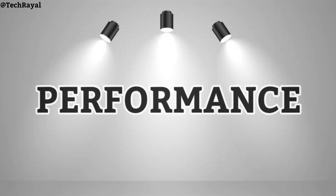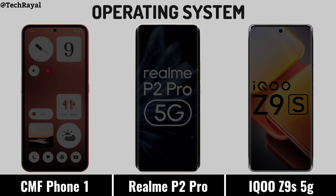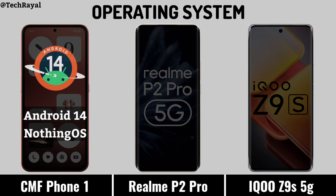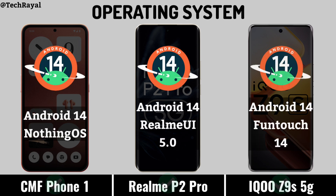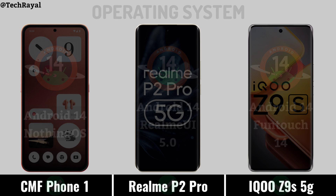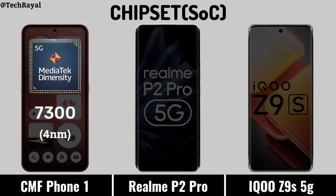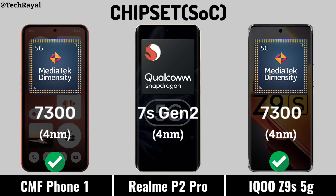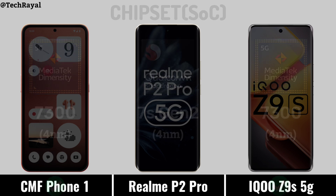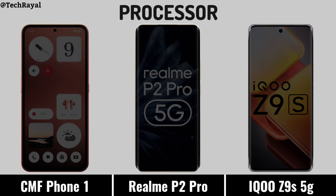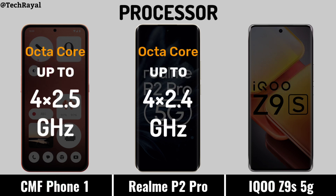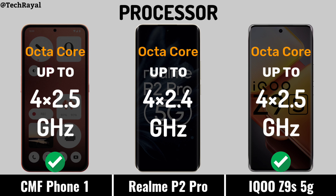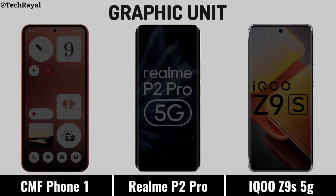Now for performance: operating system, chipset, processor, and graphic unit.